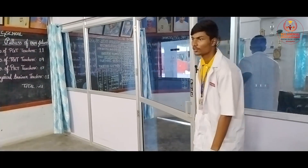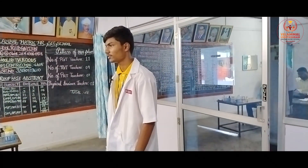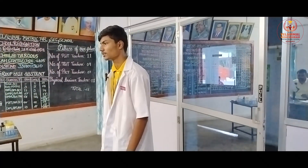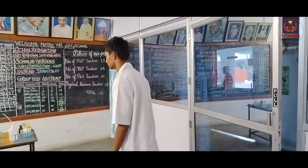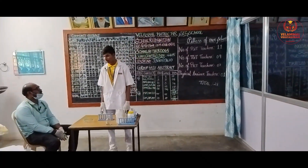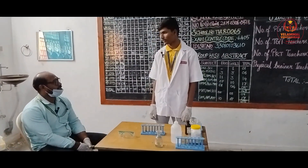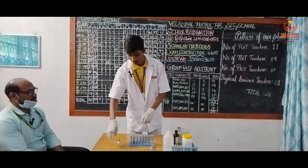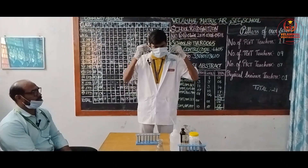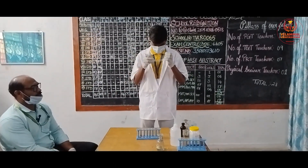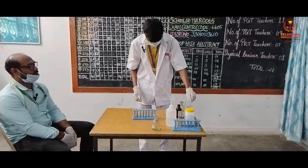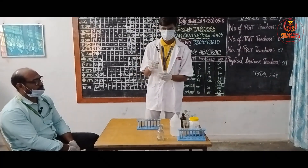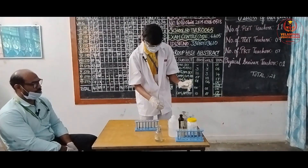Good evening, sir. Very good evening. What's your roll number? 12-05. Can you explain your practical, sir? Today I do aniline, sir — pan-farmadiazotization. Take a small amount of the organic component and add concentrated hydrochloric acid. This is diazotization. Then pour it in ice water.